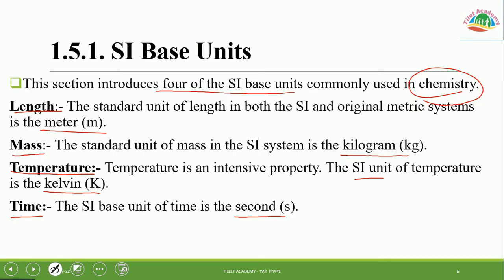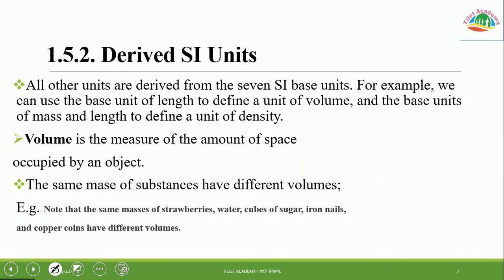Derived SI units include volume, measured in cubic meters or cubic centimeters, and density, measured as mass over volume. Temperature in everyday use is often in degrees Celsius. Volume is a measure of the amount of space occupied by an object. The same mass of a substance can have a different volume.